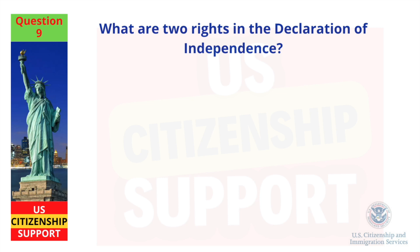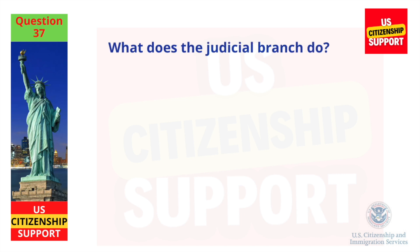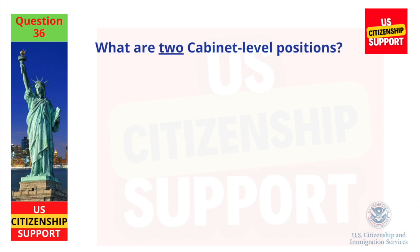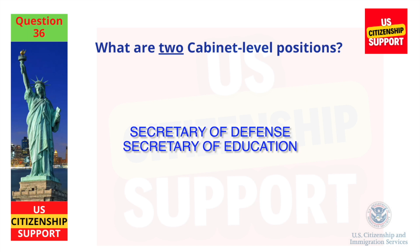What are two rights in the Declaration of Independence? Life, liberty. Who was the first president? George Washington. What does the judicial branch do? Reviews laws. What are two cabinet-level positions? Secretary of Defense, Secretary of Education.